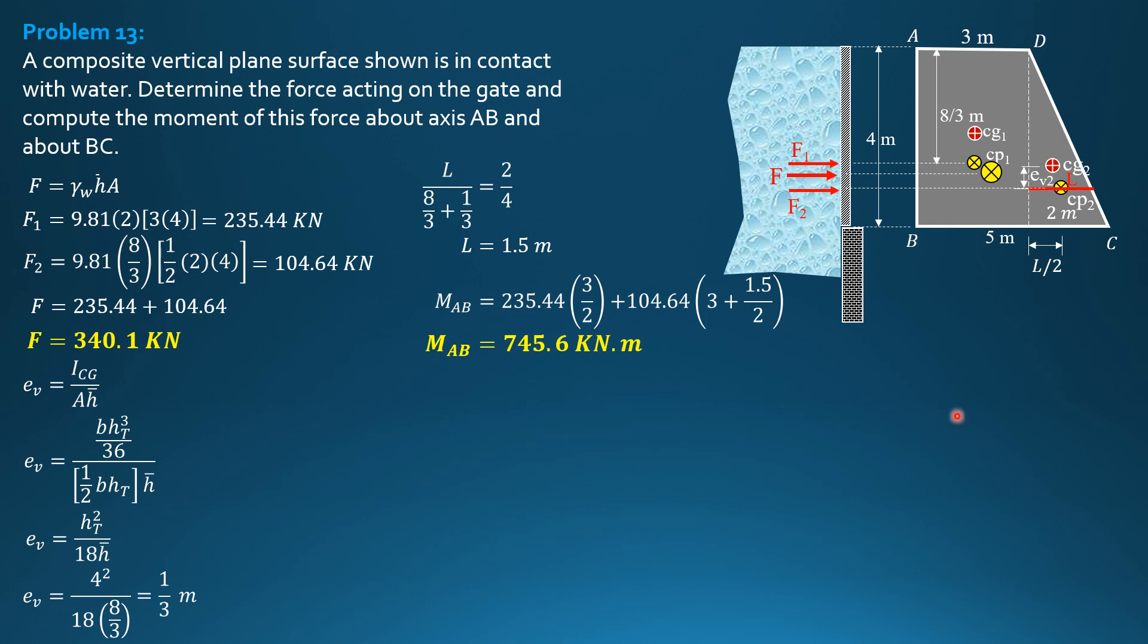It is 235.44 times this distance, which is 4 minus 8/3, so this is 4/3. CP1 from the bottom is 4/3, while CP2 from the bottom is 4 minus 8/3 minus EV2.